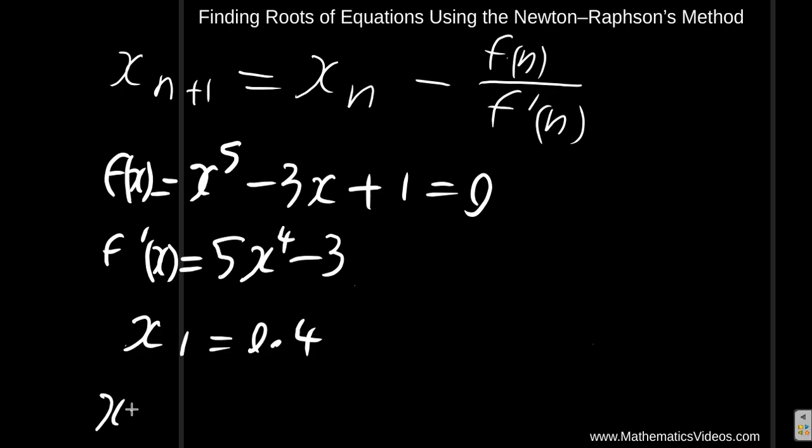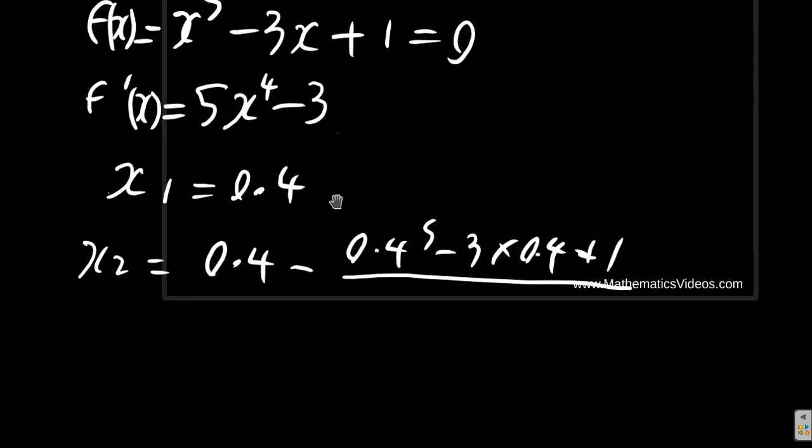Now, our x2 is equal to 0.4 minus 0.4 to the 5th power minus 3 times 0.4 plus 1 divided by 5 times 0.4 to the 4th minus 3. Let's get our calculator.